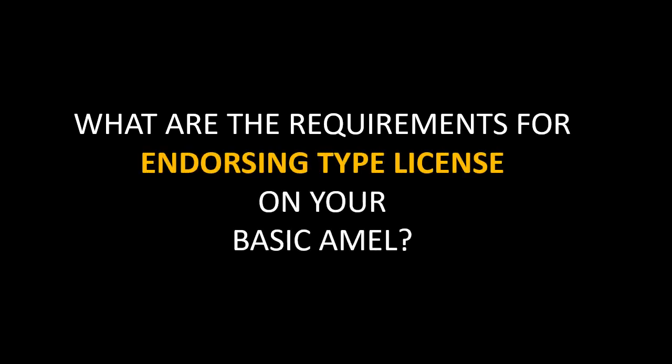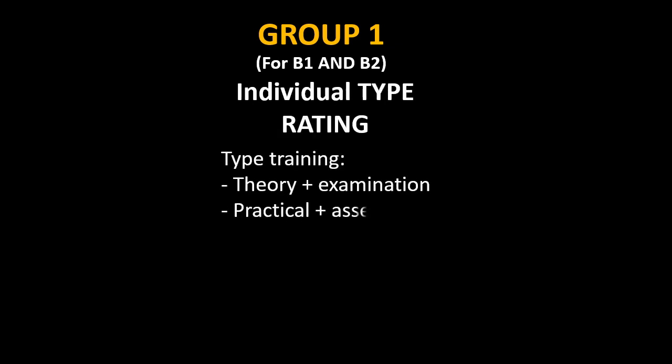Now we will learn what are the requirements for endorsing the type rating on your basic aircraft maintenance engineering license. For category B1 and B2, if the aircraft falls in Group 1, then you will need an individual type rating. This includes type training, which is divided into two portions: Portion 1 includes theory and examination, and Portion 2 includes the practical and its assessment.